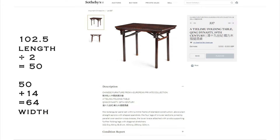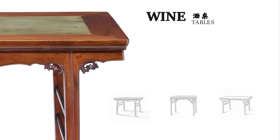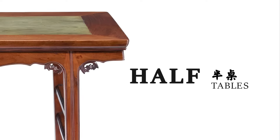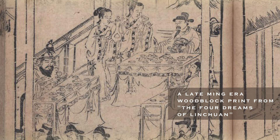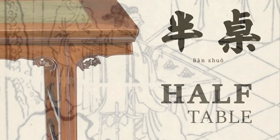Now let's briefly discuss two other kinds of tables that could be similar to or mistaken for wine tables: half tables and small painting tables. Half tables are not that much different from wine tables — in fact, at times many half tables were also used for food and drink in exactly the same manner. One could easily understand why they are sometimes mistaken for wine tables and vice versa, and that's fine — Chinese furniture is not a science.